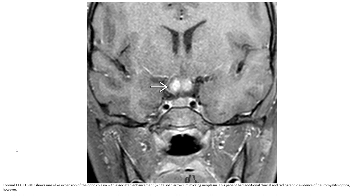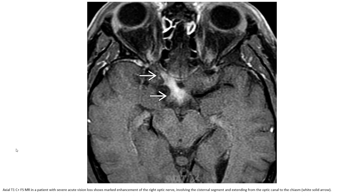In the second case, axial T1 post-contrast with fat suppression shows muscle-like expansion of the optic nerve with associated enhancement mimicking a neoplasm. This patient had additional clinical and radiographic evidence of neuromyelitis optica spectrum disorder.